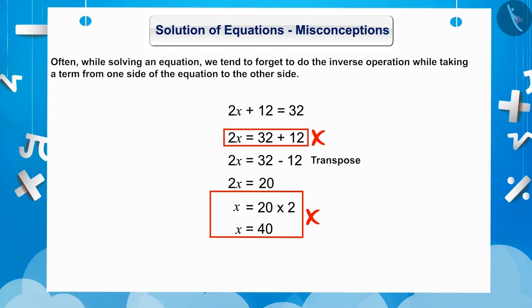The correct understanding is that since 2 is multiplied by x in LHS, it has to divide 20 in RHS. So that, we get the value of x as 10.